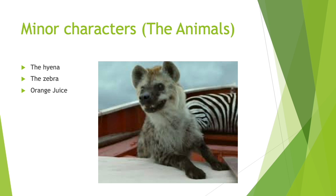The next set of minor characters are the animals Pi finds himself with on the boat. The first is the hyena — a very ugly, violent, and savage animal that ends up on the lifeboat with Pi. He eats the zebra alive and kills and eats Orange Juice, before being killed and eaten by Richard Parker. The zebra is a male Grant's zebra who breaks his leg jumping into the lifeboat, and the hyena then torments and eats him alive. Orange Juice is the orangutan who appears on the first day floating on a raft of bananas; Pi sees her as maternal, suffering human-like bouts of loneliness and seasickness.